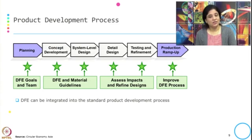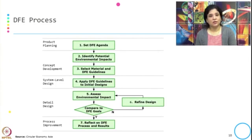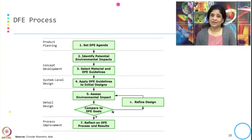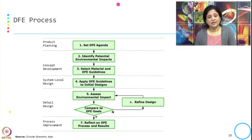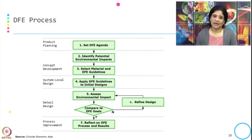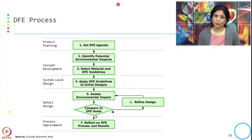DFE can be integrated into the standard product development process. In the DFE process, during product planning, the DFE agenda is set. In concept development, potential environmental impacts are identified and materials and DFE guidelines are selected. In system-level design, DFE guidelines are applied to the initial design. After the guidelines are applied, environmental impact is assessed and the design is refined if needed, compared to the DFE goal. If the environmental impact is more or does not match the goal, the design is refined, impact re-assessed, and finally the DFE process and results are reflected upon for process improvement.